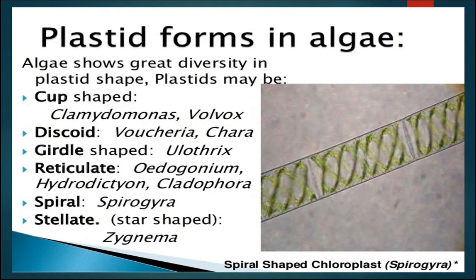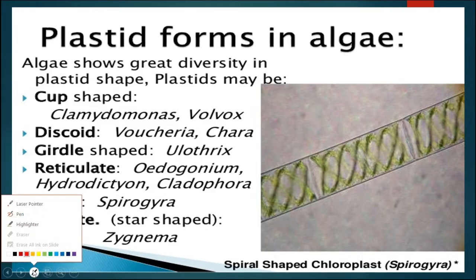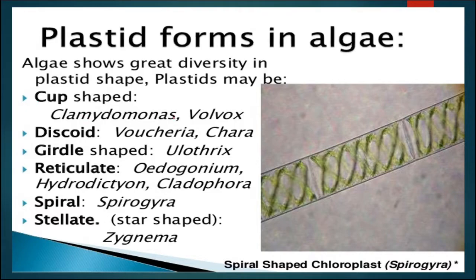In this slide, we can see the different forms of plastids in algae. Different species show different shapes of plastids. For example, Chlamydomonas and Volvox have cup-shaped chloroplasts; Vaucheria and Cora have discoid plastids; Ulothrix has girdle-shaped plastids; Oedogonium and Cladophora have reticulate plastids; Spirogyra has spiral-shaped plastids; and Zygnema has star-shaped plastids.